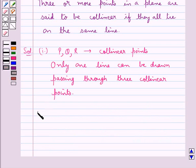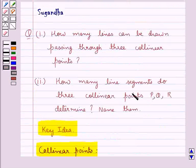Now let us see the second part of the question which says: How many line segments do three collinear points P, Q, R determine? Name them.